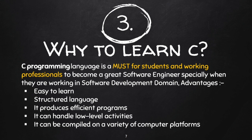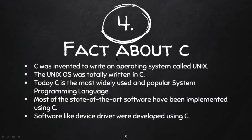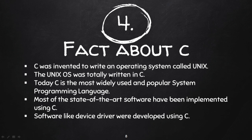A fact about C: it was invented to write an operating system called Unix. The Unix operating system is totally written in C programming language. Unix is a powerful and free operating system mostly used in companies. C is the most widely used and popular system programming language.